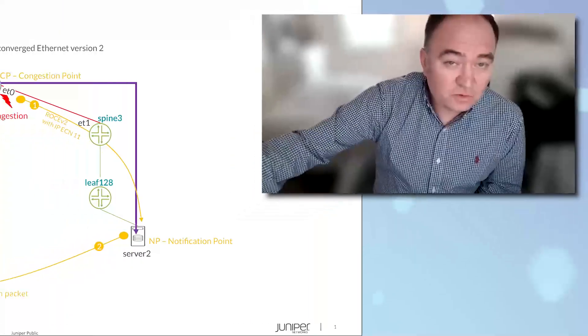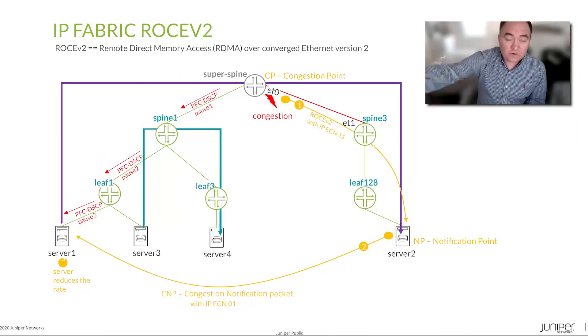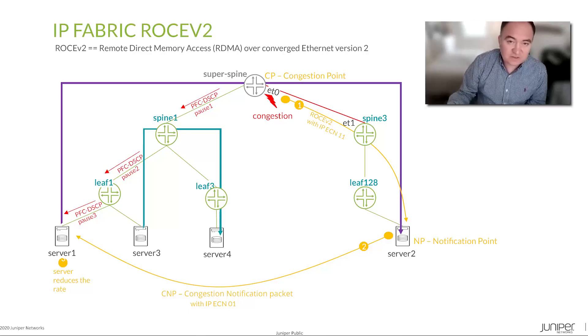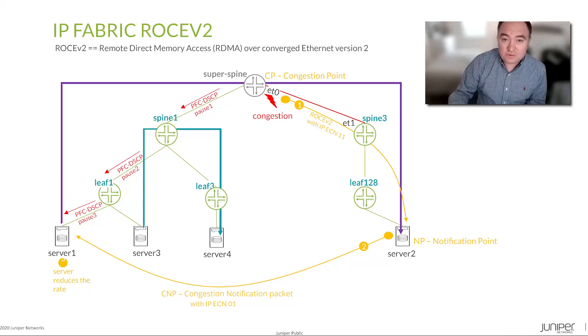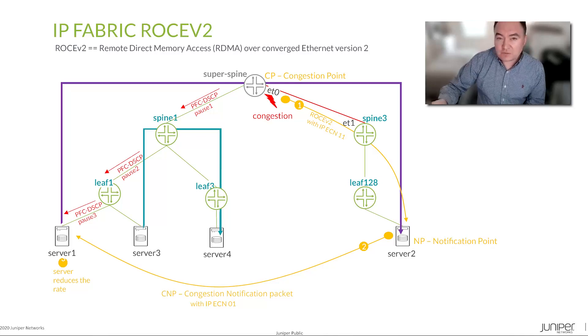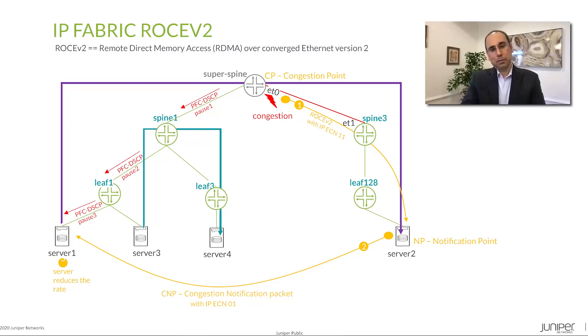Can RoCEv2 coexist with other types of flows that are not RDMA? Exactly. On these three-stage, five-stage, or collapsed architectures, we can run regular compute traffic for our customers. The only thing is we need to make sure that the RoCEv2 RDMA traffic gets some privilege compared to other traffic that potentially uses TCP. In the case of RoCEv2 we use UDP, so we need to make sure this traffic is always correctly leveraged on the IP fabric.